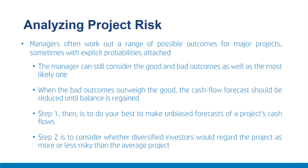Step 1: make your best unbiased forecast of a project's cash flows, incorporating all risks including diversifiable and market risks. Step 2: consider whether diversified investors would regard the project as more or less risky than average — only market risks are relevant here. Importantly, avoid fudge factors in discount rates. In the project Z example, reducing forecasted cash flows from $1M to $900,000 gave the correct answer directly. You could get the same answer by adding a fudge factor to the discount rate, but once you focus on cash flows correctly, you do not need the fudge factor.